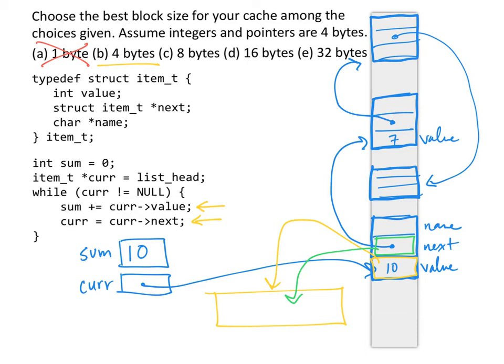If however the block size had been eight bytes, then when we brought in value, we would have also brought in next. By asking for four bytes, we actually get eight.